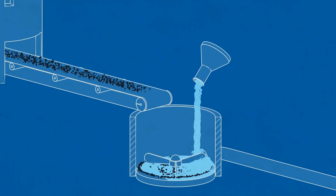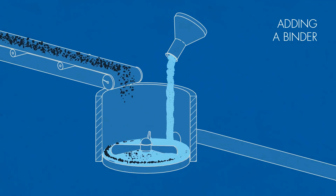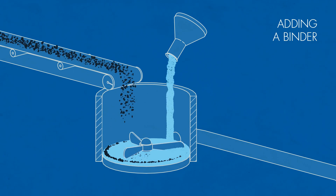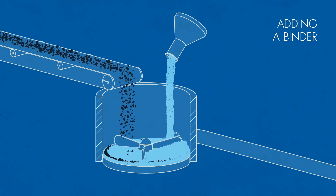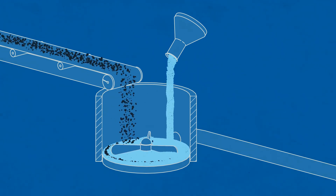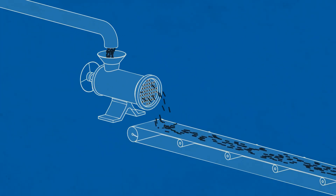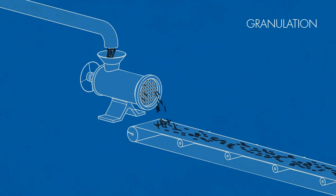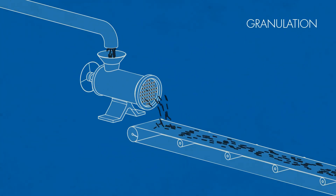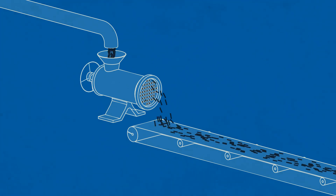Next, the coal powder is loaded into the binder and mixed thoroughly in order to get a coal resin paste. Then the paste is fed to the granulation area, where pellets are formed under pressure.